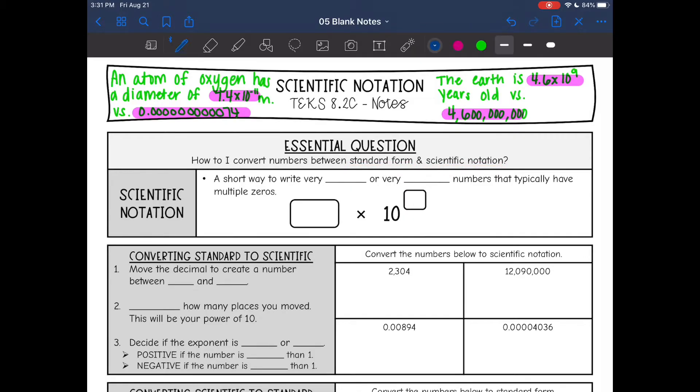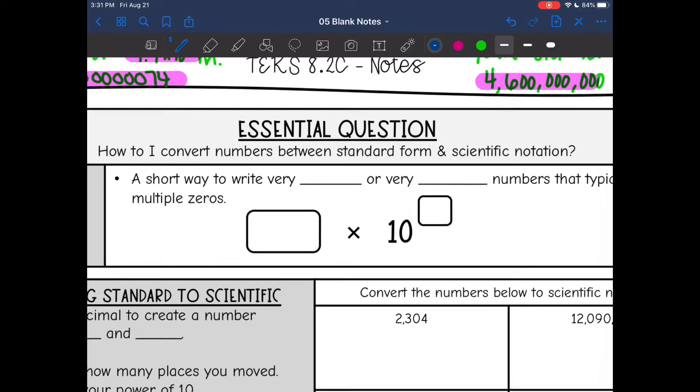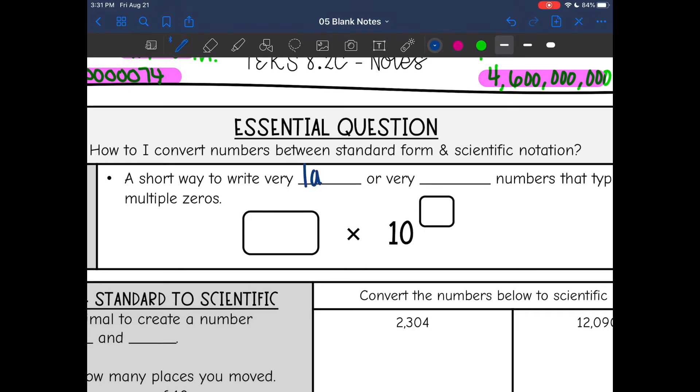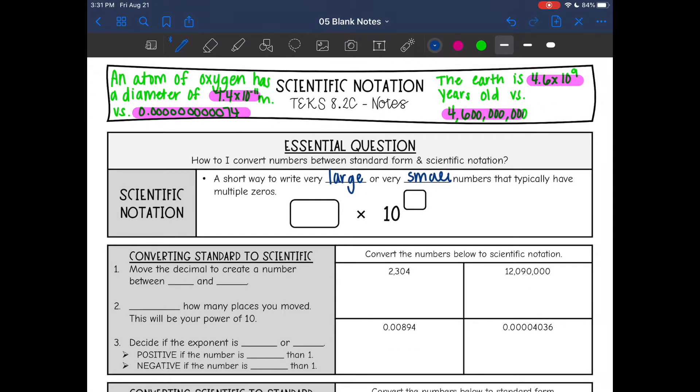So let's go ahead and define that scientific notation is just a short way to write very large or very small numbers that typically have multiple zeros. So they're a little bit more difficult to read.